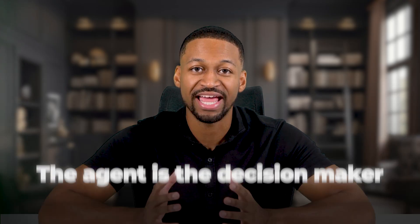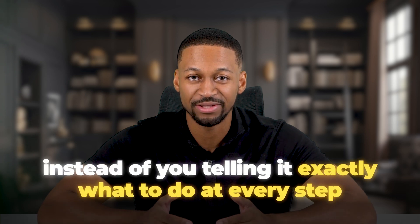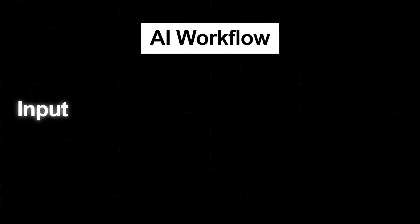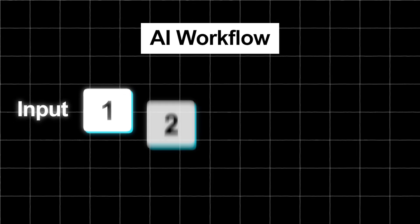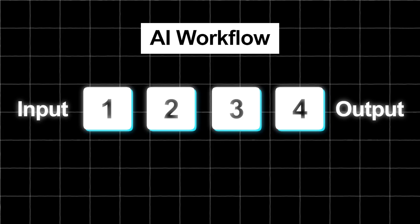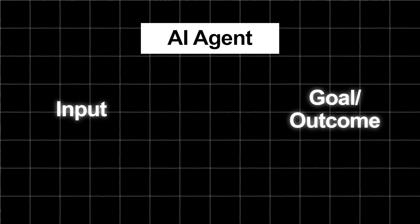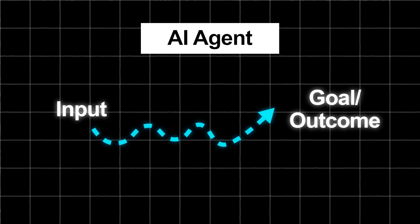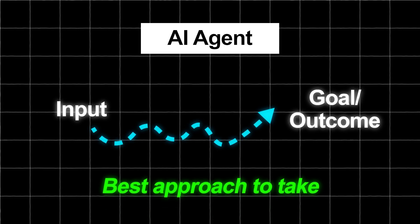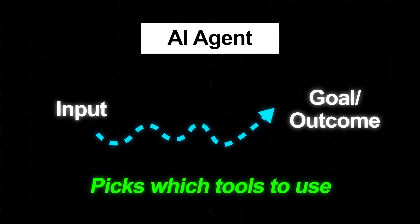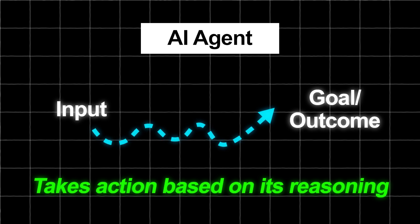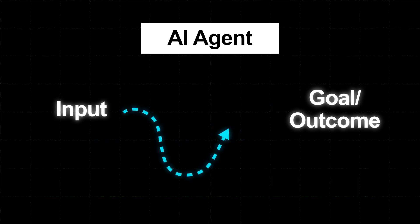Here's the most important thing you need to understand about AI agents: the agent is the decision maker instead of you telling it exactly what to do at every step. In a workflow, you tell the AI exactly what to do step by step and design the whole path ahead of time. But with an AI agent, you give the AI a goal or an outcome you want and it figures out how to reach that goal on its own using whatever tools and methods it thinks will work best. The AI reasons about the best approach to take, picks which tools to use, takes action based on its reasoning, and if something does not work the way it expected, it tries a different way instead of just stopping.